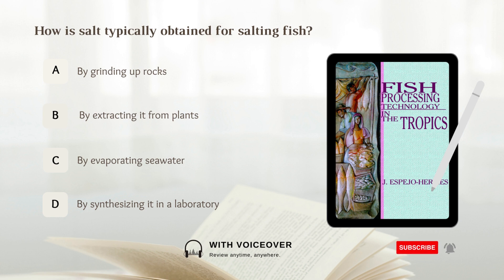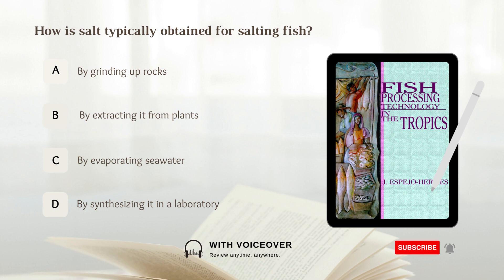How is salt typically obtained for salting fish? A. By grinding up rocks. B. By extracting it from plants. C. By evaporating seawater. D. By synthesizing it in a laboratory. Answer: C. By evaporating seawater.